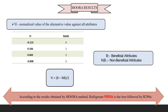These are the final results from the MOORA method. The yi value is the normalized value for the alternative against all attributes, calculated using the formula yi = b − nb, where b is the beneficial attribute sum and nb is the non-beneficial attribute sum.